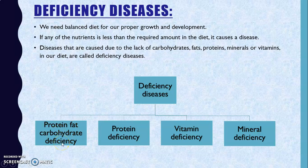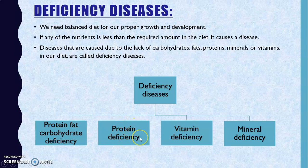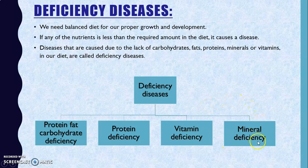Deficiency diseases can be classified based on which nutrient is missing. If protein, fats, and carbohydrates are all missing from the diet, that causes one type of disease. If only protein is missing, it causes a protein deficiency disease. If any vitamin — A, B, C, or D — is insufficient, it causes vitamin deficiency disease. Similarly, insufficient minerals cause mineral deficiency diseases.